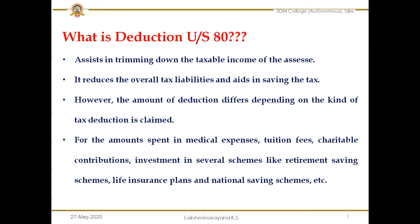On one side you earn income, and on the other side you spend money. For some spendings and investments, if you are allowed to deduct those amounts, then your income will come down, your tax liability will come down, and you will be motivated to disclose your income before the income tax department and pay taxes honestly. This is an arrangement to trim down the tax liability of assesses. An assessee is supposed to make use of various deductions available from Section 80C to 80U.